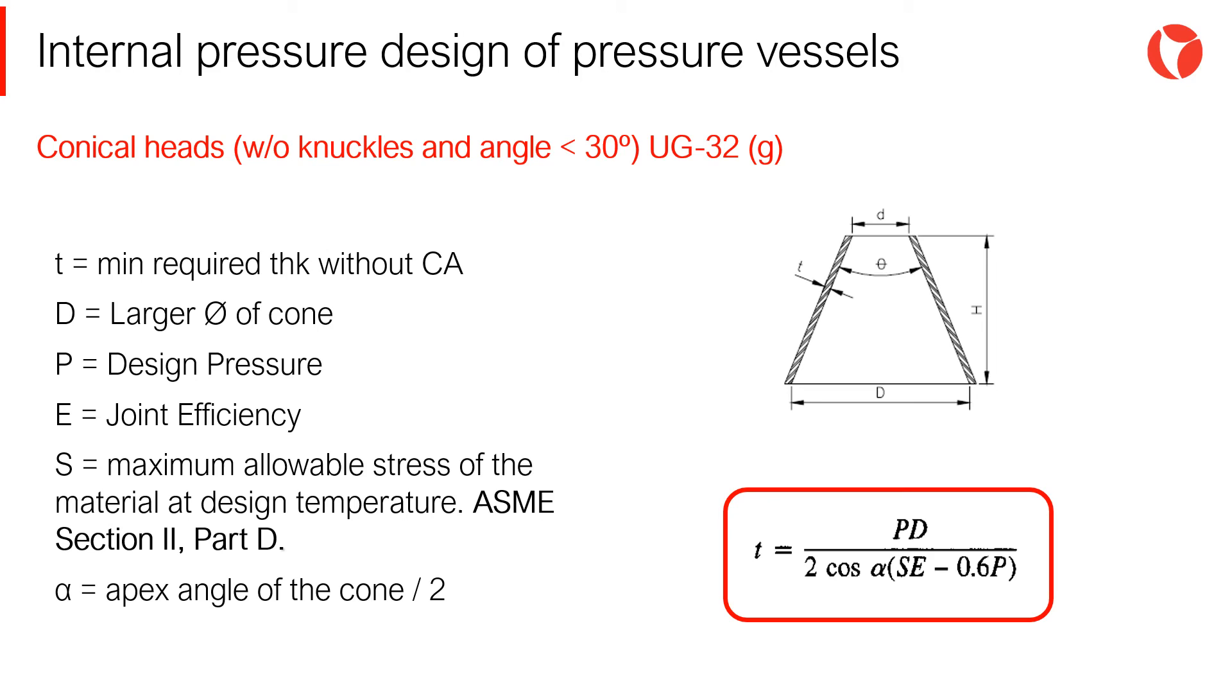If angles bigger than 60 degrees are necessary, knuckles must be used in order to avoid large stress concentrations in the junction. This means using torriconical transitions.